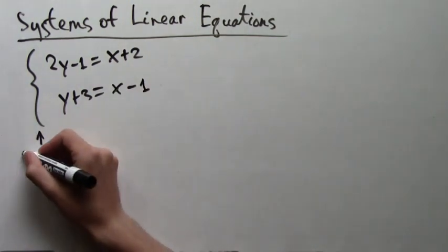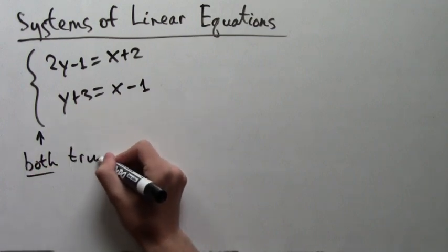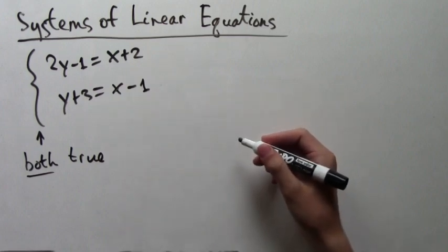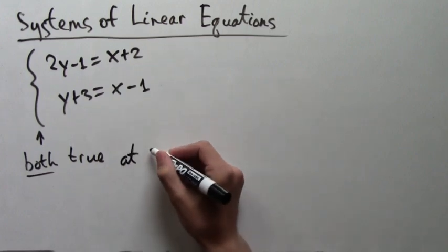We're going to solve this equation using what's called the substitution method. And again, I'm highlighting that the bracket means that both of these equations have to be true at the same time.